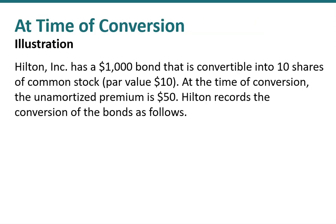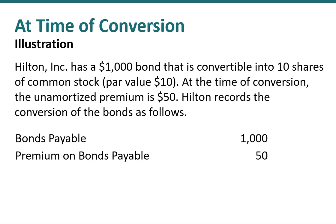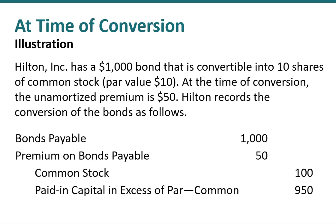Let's take a look at an example. Hilton has a $1,000 bond that's convertible into 10 shares of common stock with a $10 par value. At the time of conversion, the unamortized premium is $50. We record the conversion as follows: first, we debit bonds payable and the premium on bonds payable to remove the debt from our books. Then we record the common stock at par — 10 shares at $10 per share par value — and the difference gets plugged to additional paid-in capital.